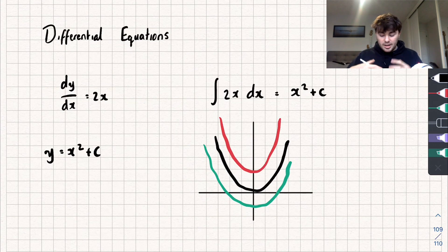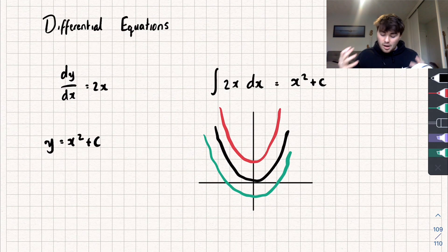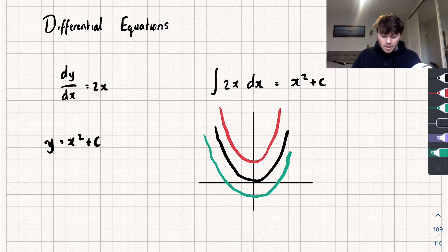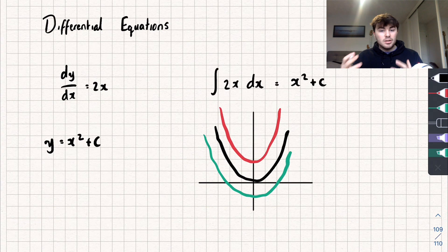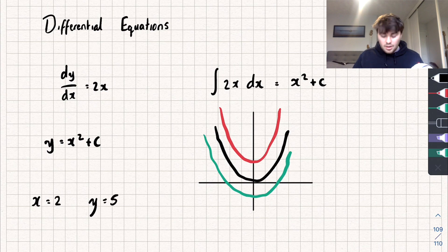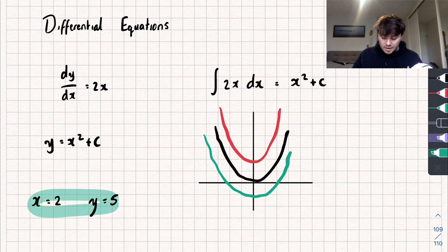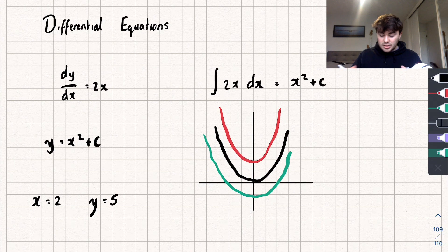To find a particular solution, a question will have to give you what's called an initial value. An example could be: solve the differential equation dy/dx equals 2x and find the particular solution when x equals 2 and y equals 5. To do that we're going to substitute x equals 2 and y equals 5 into our general solution.